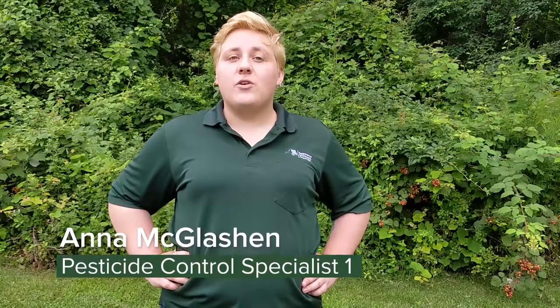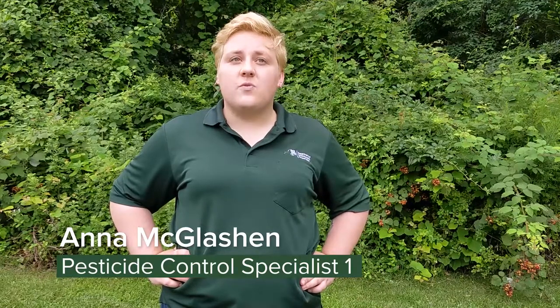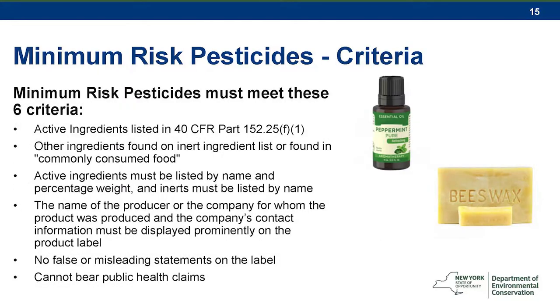Certain pesticide products are exempt from federal registration because they are considered to be relatively safe for human health and the environment. These products are called minimum risk pesticides. Minimum risk pesticides must comply with certain composition and labeling requirements listed on the screen and found in 40 CFR 152.25 to qualify for the registration exemption.